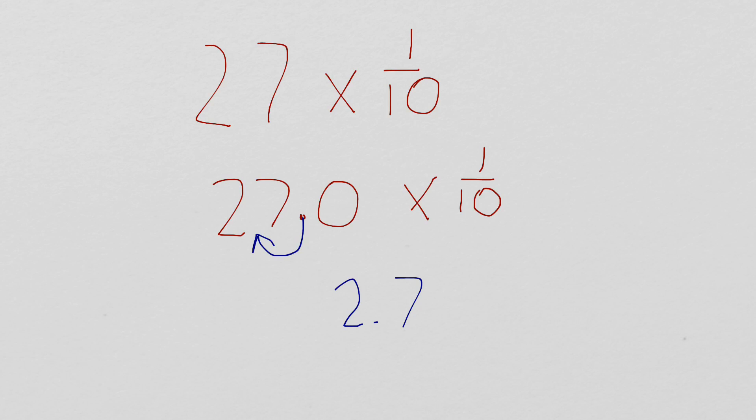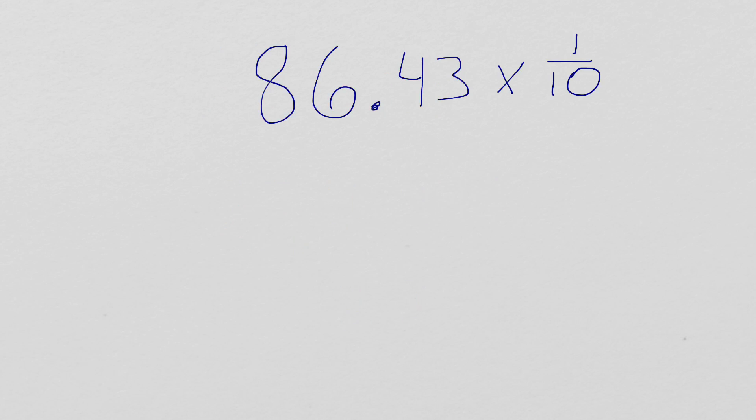Let's try another just to make sure we've got this. So, this time, I've given you 86 and 43 hundredths, times 1 tenth. Well, what do we say happens when we multiply by 1 tenth? Our decimal is going to move one space to the left. So, I'll move it here. And, our answer ends up being 8 and 643 thousandths.